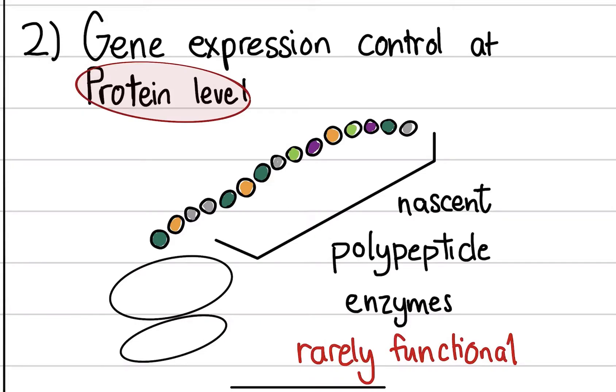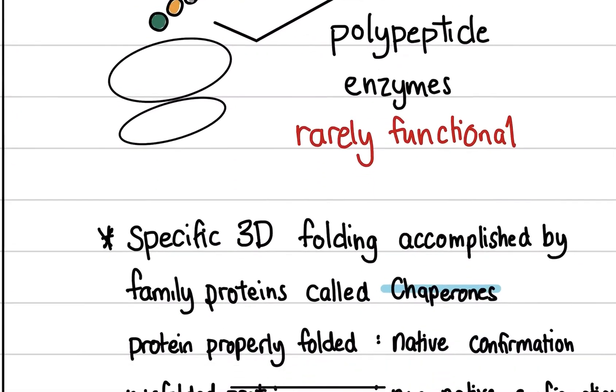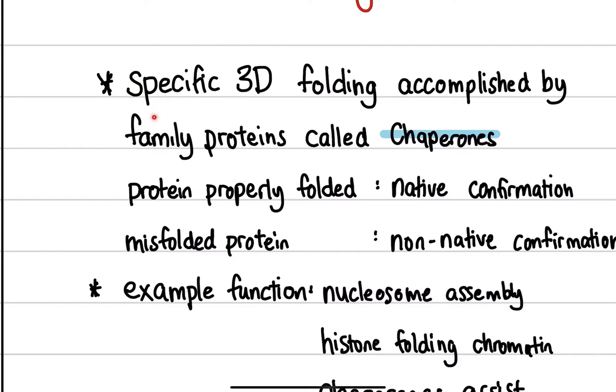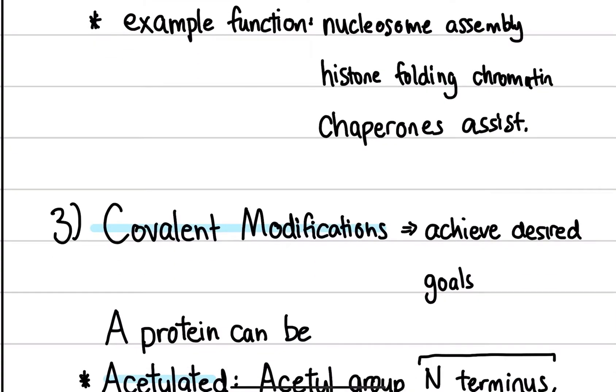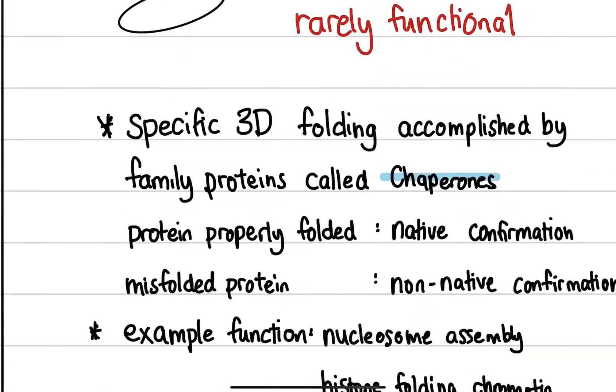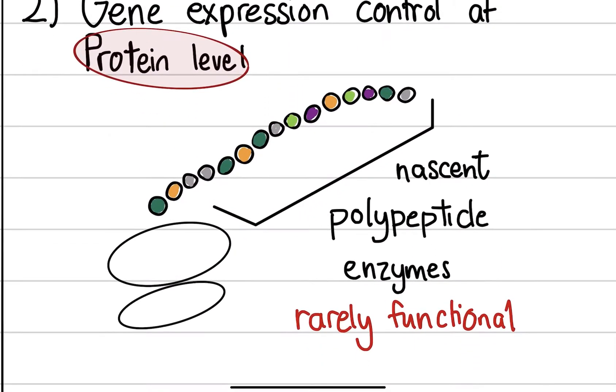We have now understood that gene expression control is not just at the DNA level, it's also at the protein level. And we were talking about nascent polypeptide enzymes and how they're rarely functional. And that's because we talked about some factors over here in terms of its structure and also some modifications like covalent bonds happening once these polypeptides are formed. But we haven't discussed a particular example.